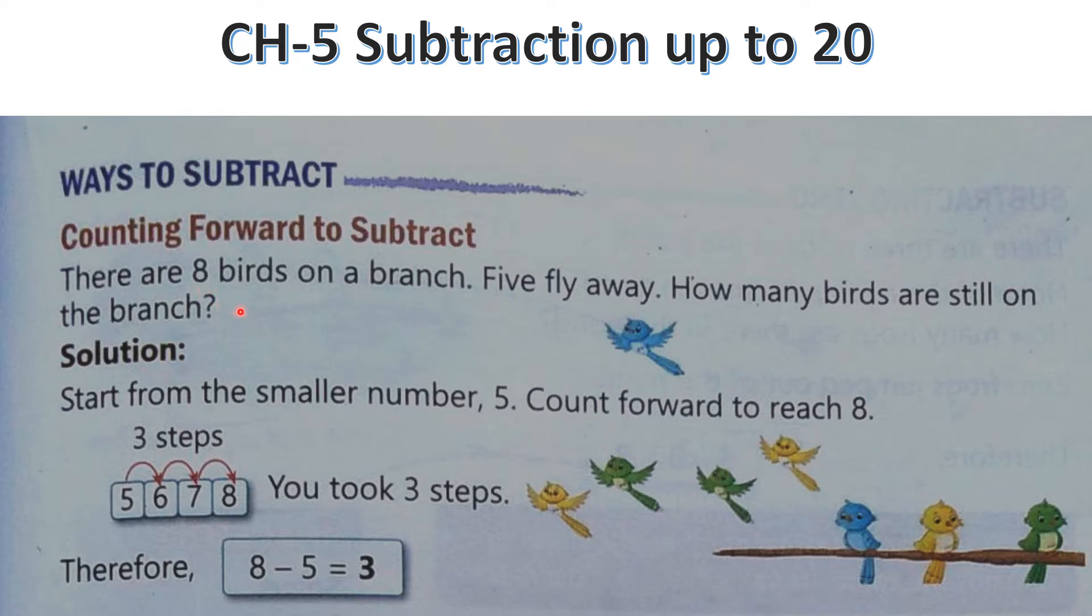So there are 8 birds on the branch. You can see there are 8 birds, 5 fly away. How many birds are still on the branch? So start from the smaller number, count forward. So we have to write this number, suppose 5, 6, 7, 8, right? Start from 5 up to 8 and count it, how many steps? We have to reach on 8. So 1, 2, 3, that means the answer is 3. 3 steps, that means our answer is 3. Means counting forward, we always start with the smaller number. Got it children?